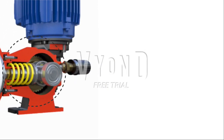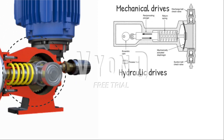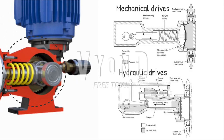Diaphragm pumps come in two varieties: mechanically and hydraulically operated. Mechanical drives are simple and inexpensive, but are only appropriate for very mild duty applications due to their short diaphragm life. Hydraulic drive diaphragms can be single or double; a single unit is the most typical for the majority of services, while a double diaphragm may be required for particularly hazardous services.